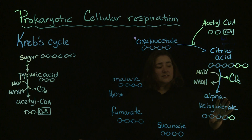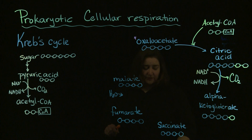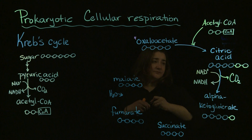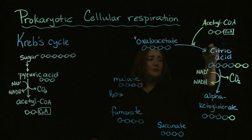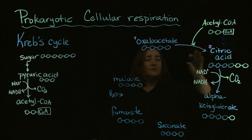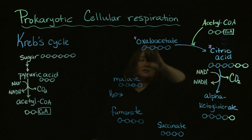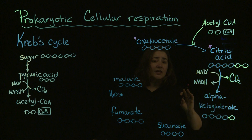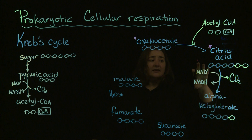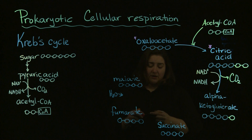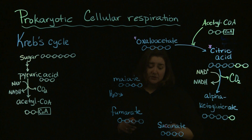Citric acid is going to go to alpha-ketoglutarate. The terms I want you to know are: oxaloacetate, citric acid, and then I want you to concentrate on the products that are produced as part of the Krebs cycle.